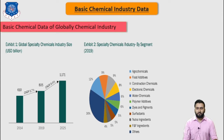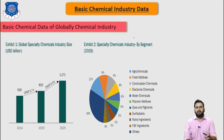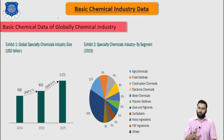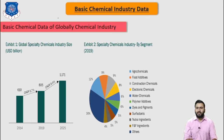Now let's start chapter number one, which is basic chemical industry data. The chemical industry is one of the most important industries in manufacturing, with its products being critical to a wide range of end-use applications. It is central to the world economy, converting raw materials such as oil, natural gas, metals, and minerals into products used across agriculture, chemicals, food and beverage, health, personal care, automotive, electronics, and water.